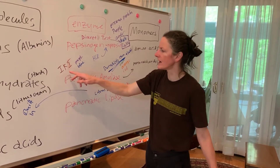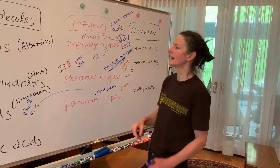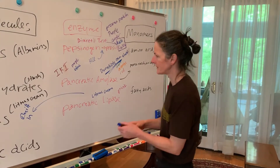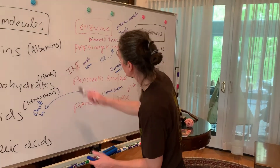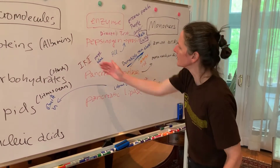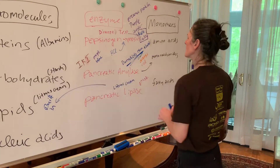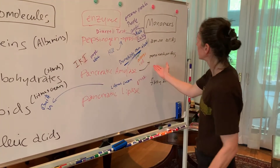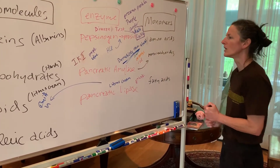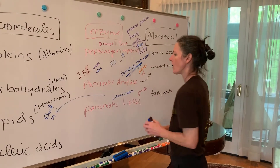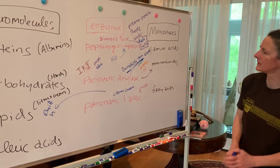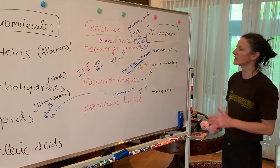So to summarize our indicators: IKI — iodine potassium iodide, very similar to Lugol's solution — indicates the presence of starch. Benedict's indicates the presence of monosaccharides. This lets us see how well our pancreatic amylase digested its substrates — all our macromolecules being the substrates since the reactions are catalyzed by enzymes.